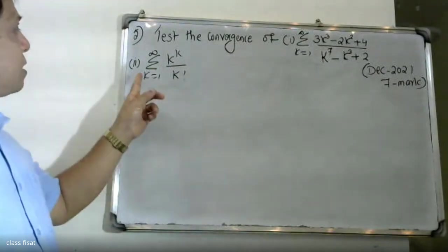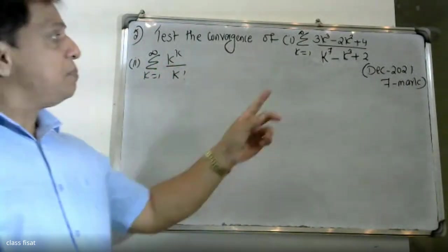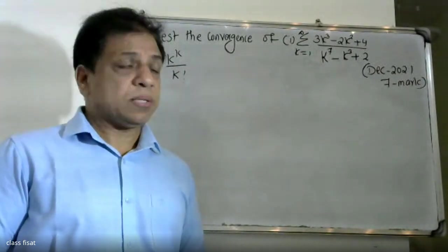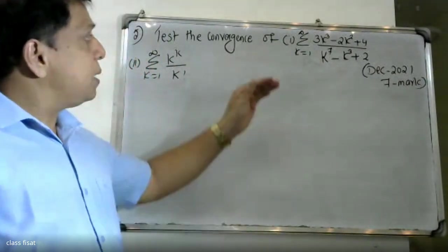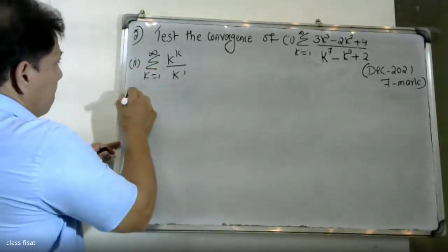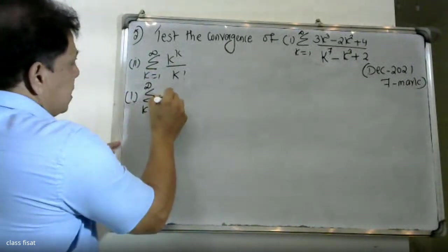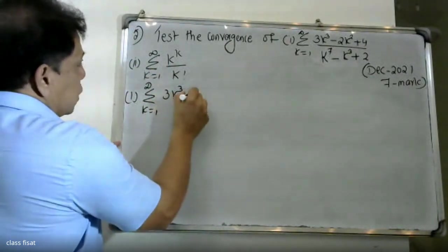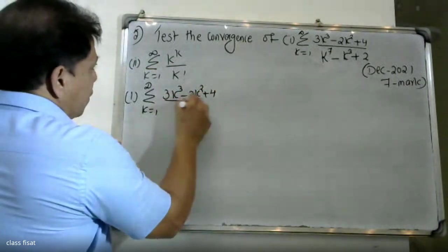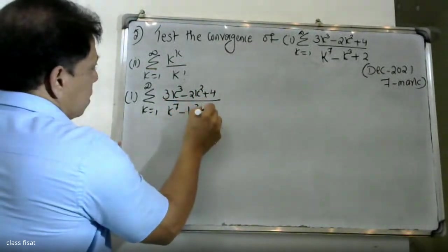And the second question: Σ from k=1 to infinity of k^(k/8). This is from December 2020, an 8-mark question. These are the 2 problems. Σ from k=1 to infinity of (3k³ - 2k² + 4) divided by (k⁷ - k³ + 2).